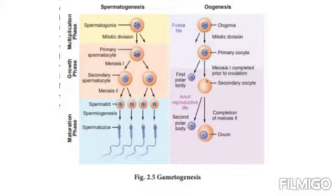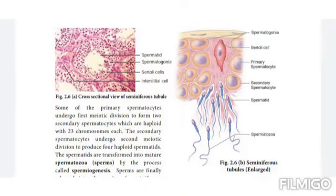The two gonadotropins are follicle-stimulating hormone (FSH) and luteinizing hormone (LH). FSH stimulates testicular growth and enhances the production of androgen-binding protein by the Sertoli cells, thus helping in the process of spermatogenesis. Luteinizing hormone acts on the Leydig cells and stimulates the synthesis of testosterone, which in turn stimulates the process of spermatogenesis.